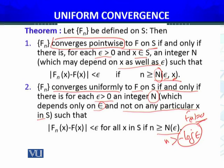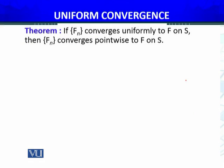Ab of course, jo uniform convergence hai, jo zyada stronger condition hai ke N jayo, wo epsilon pe sirf depend kare — agar uniform convergence aap ke paas sequence of functions ki hai toh N jayo sirf epsilon pe depend karta hai, x pe depend nahin karta hai. Toh of course humhare paas ye pointwise convergence hogi.